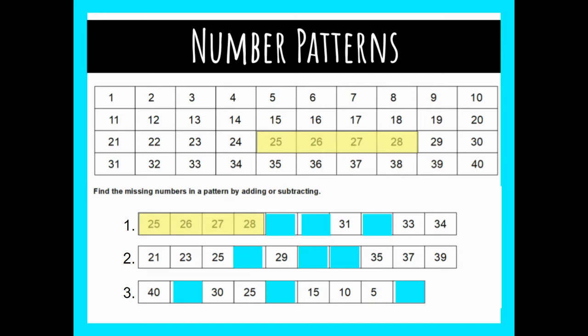My next step: how many is it adding? I see up on the number line that it's just adding 1, so I'm going to be adding 1 in this pattern. My pattern is plus 1, and that's going to help me solve for my missing numbers. If I leave off on 28, plus 1 is 29, plus 1 is 30.